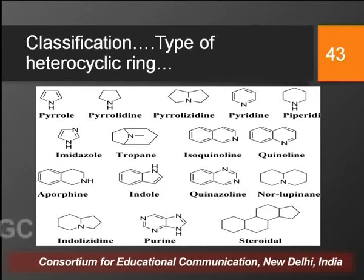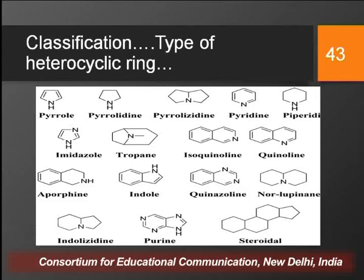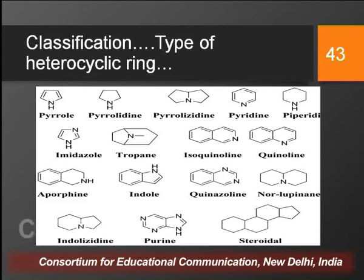Typical alkaloids are further classified on the basis of the type of heterocyclic ring present in their structure. There are numerous types of heterocyclic rings that occur in alkaloids, and on that basis they are categorized as: pyrrolidine, pyrrolizidine, pyridine, piperidine, tropane, quinazoline, indole, purine, steroidal, and terpenoidal alkaloids. We will now discuss each class in detail.